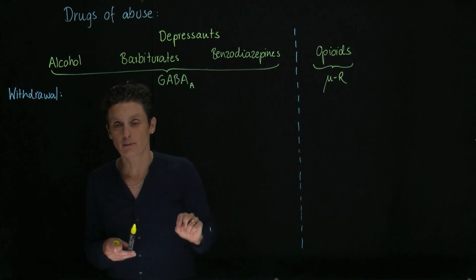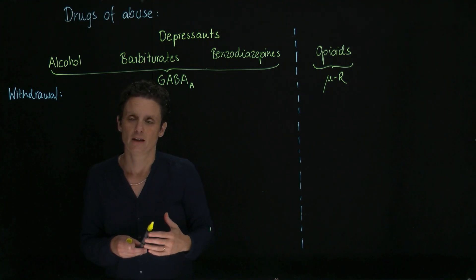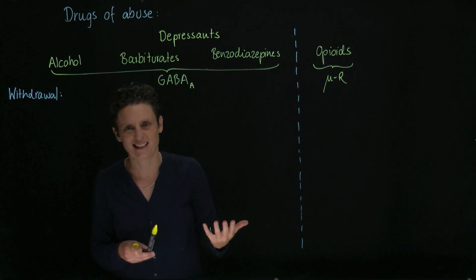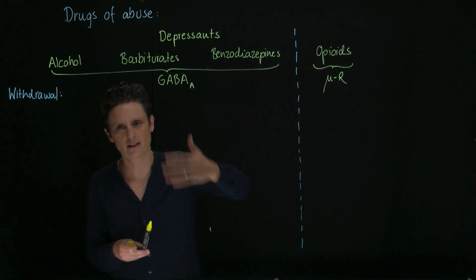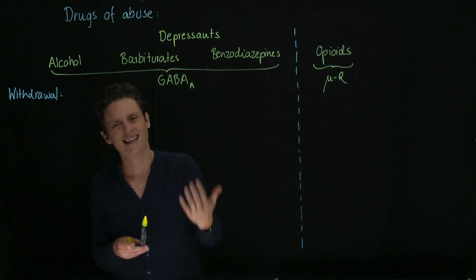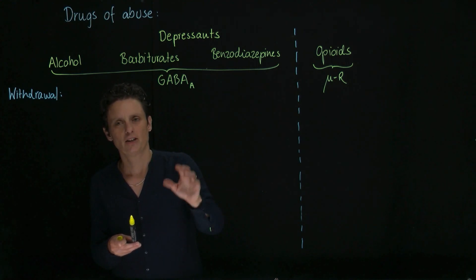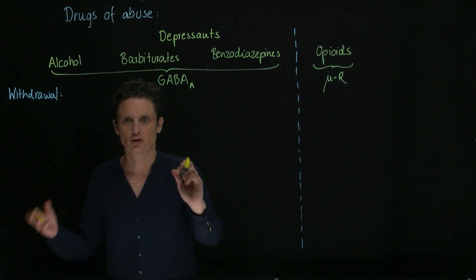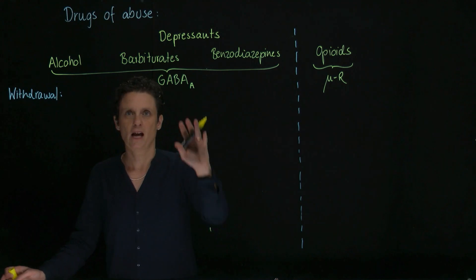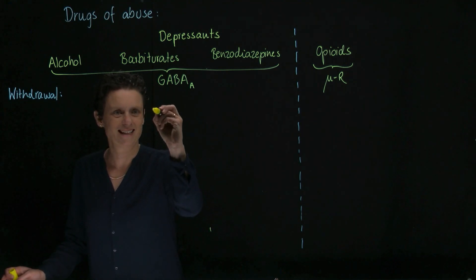Because when you act on the GABA receptor, you basically have the capacity of being an anti-seizure medication. Benzos and barbiturates are still used in kids and were once major anti-seizure medications. So you're going to get the opposite. The most dangerous thing about withdrawal is seizures here.